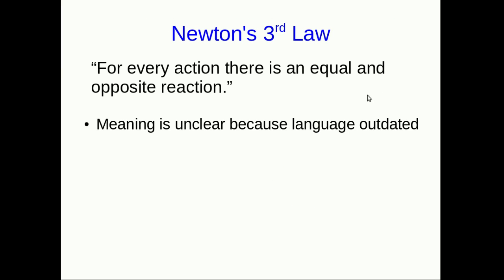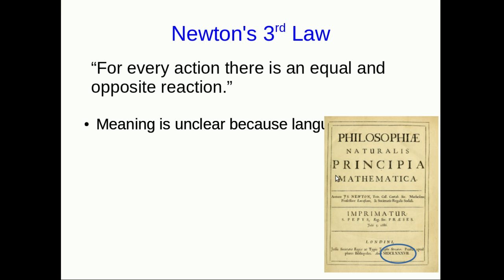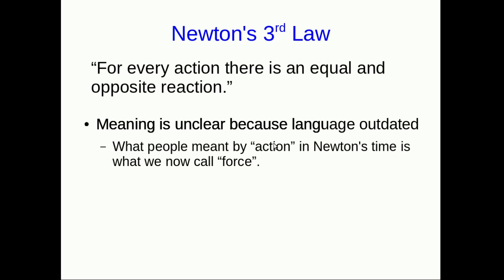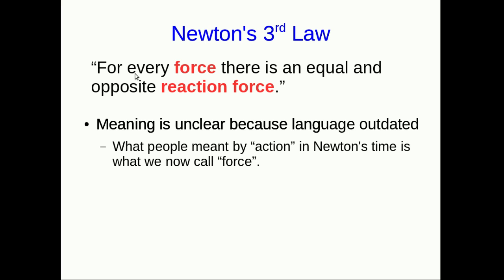Now we come to Newton's third law, which is a statement about interaction pairs, and you've probably learned it in a previous physics course by this original statement that Newton made. But I actually think we do a great disservice to ourselves and to Newton by learning it this way, because the meaning is unclear. The reason the meaning is unclear is that Newton wrote this down in the 1600s, and the English language has changed a fair bit since then. What scientists meant by action at that time is what we now call a force. So to start with, we could rewrite it: for every force, there's an equal and opposite reaction force.